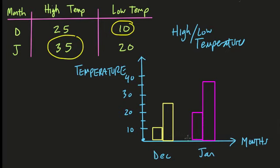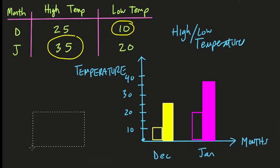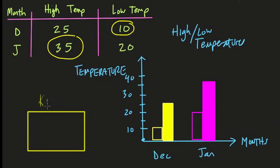And then what you want to do is set up some type of key. So we know what the pink and the yellow represent. Or in this case, I think it's more important to highlight the high versus the low. So what we can say in our key, if we want to set that up over here. And you always want to set up some type of key for a double bar graph.